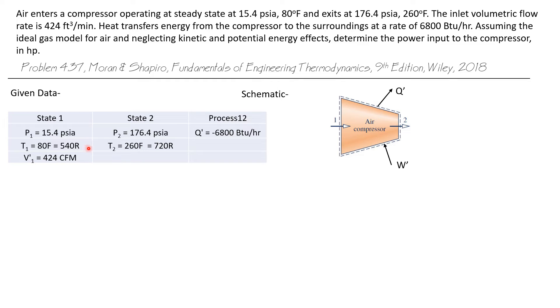Because we're dealing with an ideal gas here, let's go ahead now and convert Fahrenheit degrees to Rankine degrees by adding 460 to them. So the inlet now is 540 degrees R, and the exit is 720 degrees R.